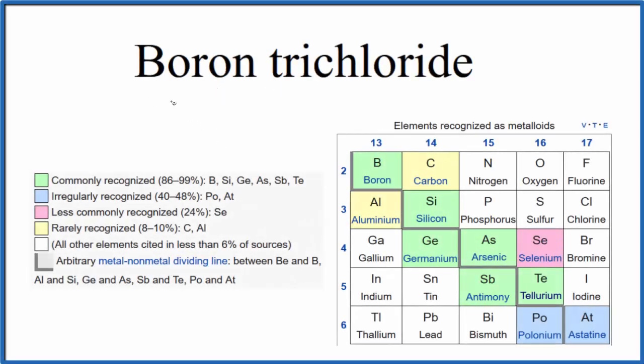In this video, we'll write the formula for boron trichloride. So the first thing we need to realize: boron here, boron is a metalloid. It's one of the commonly recognized metalloids.